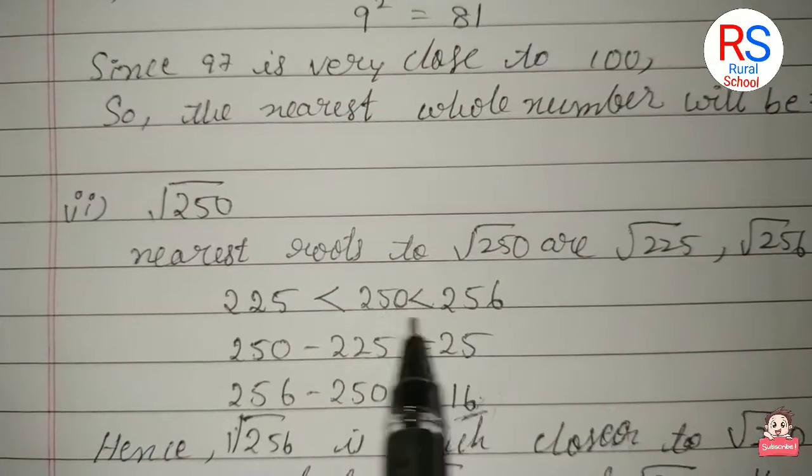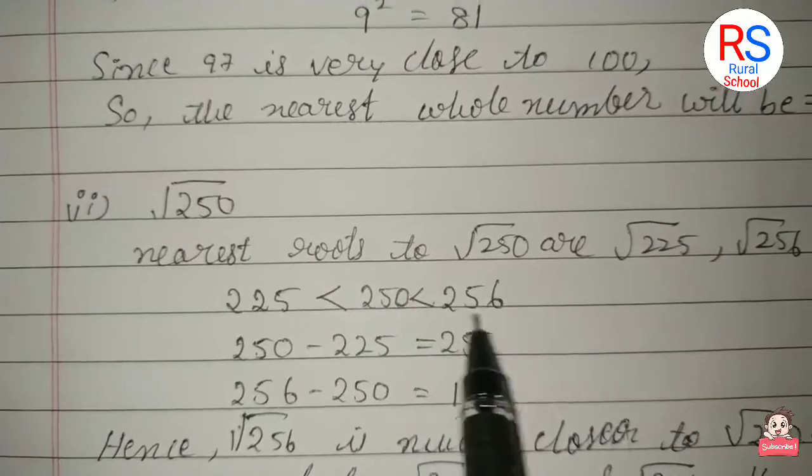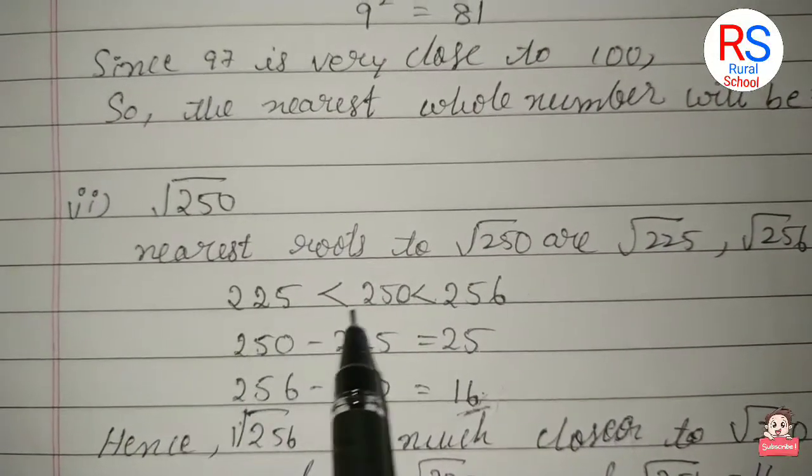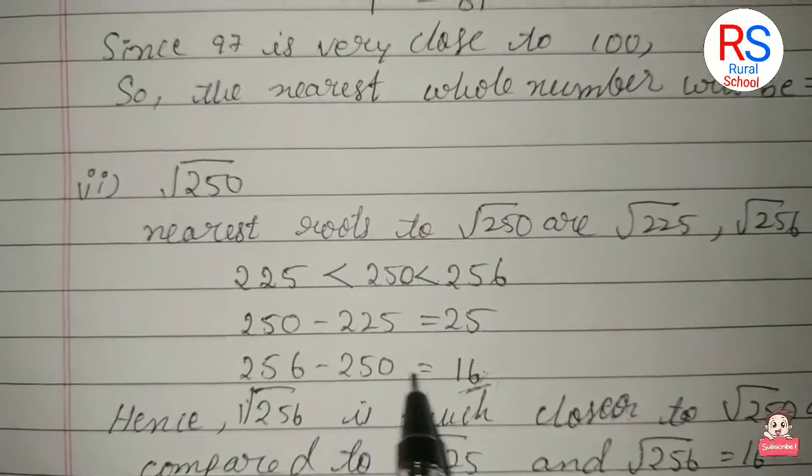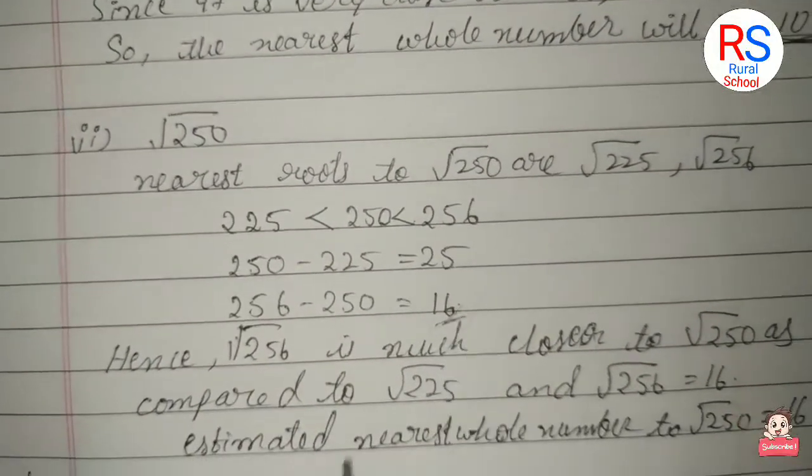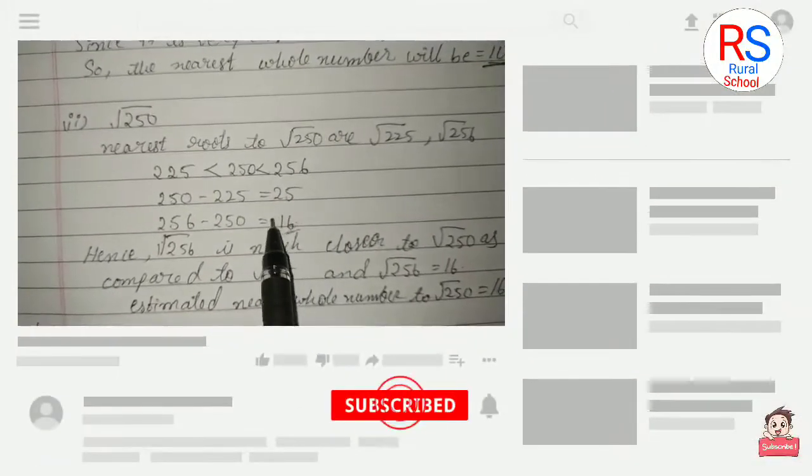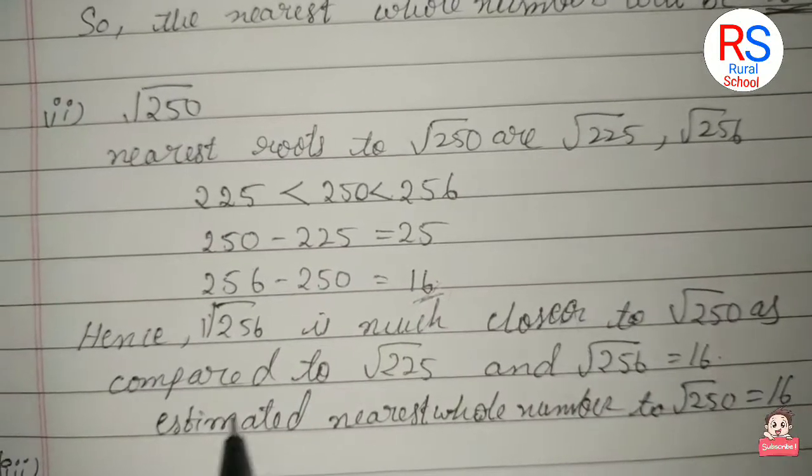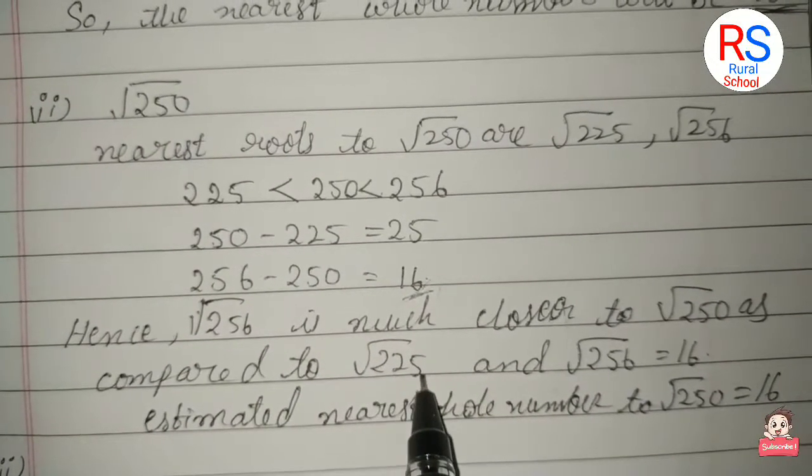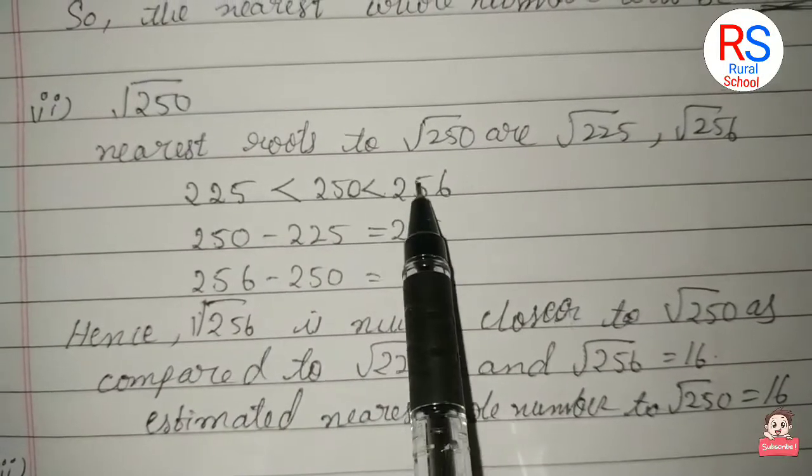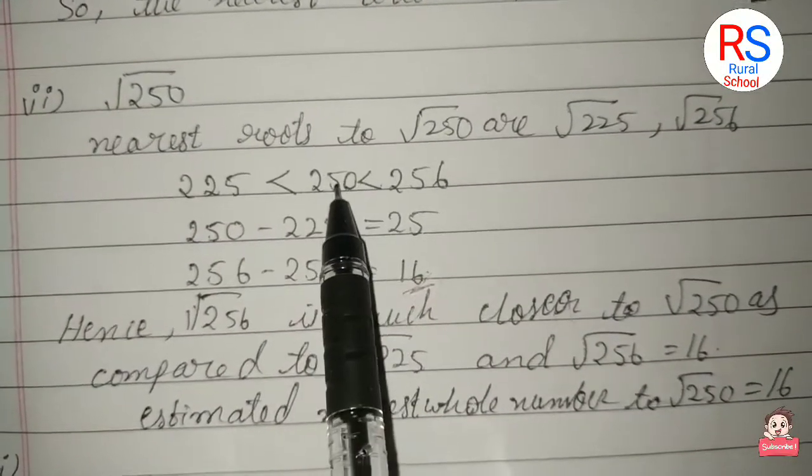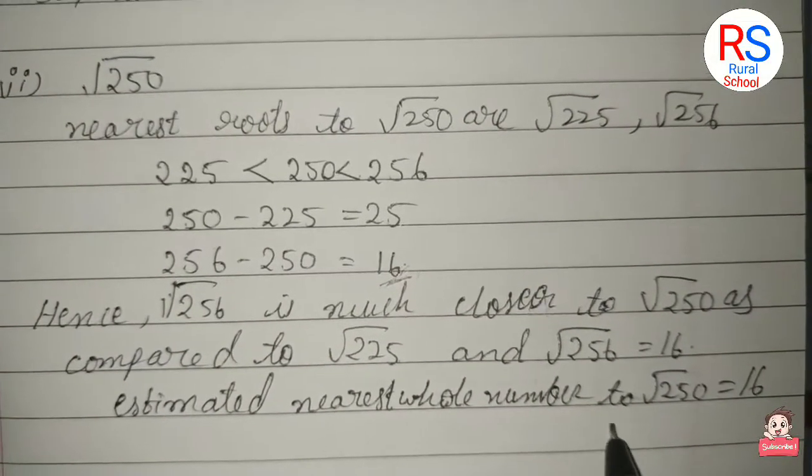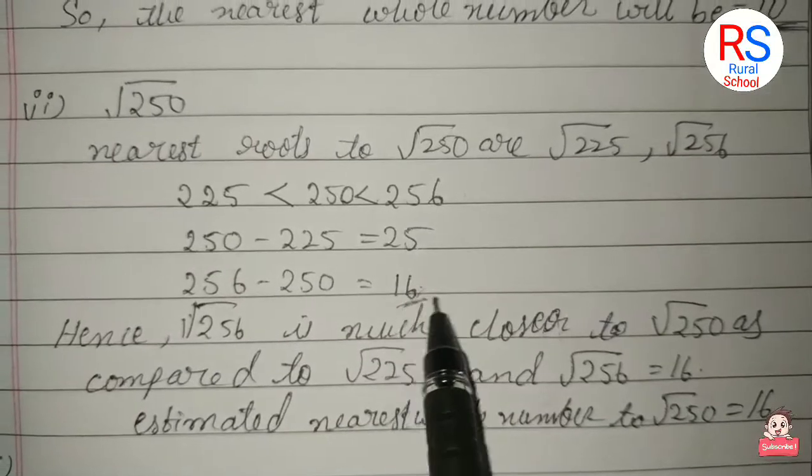16 is the nearest number. √256 is much closer to 250 as compared to √225. So the estimated nearest whole number for √250 must be 16.